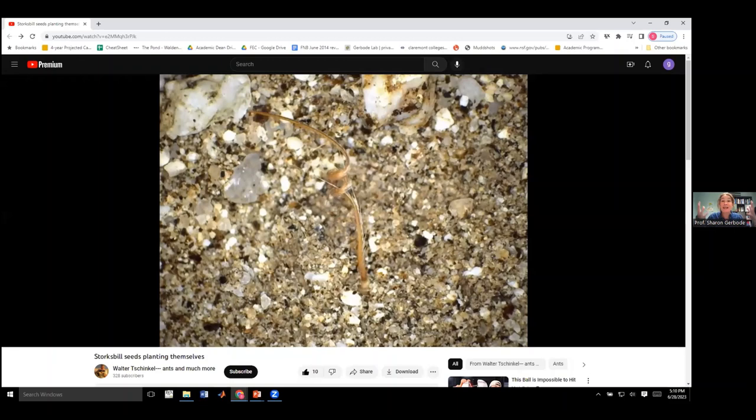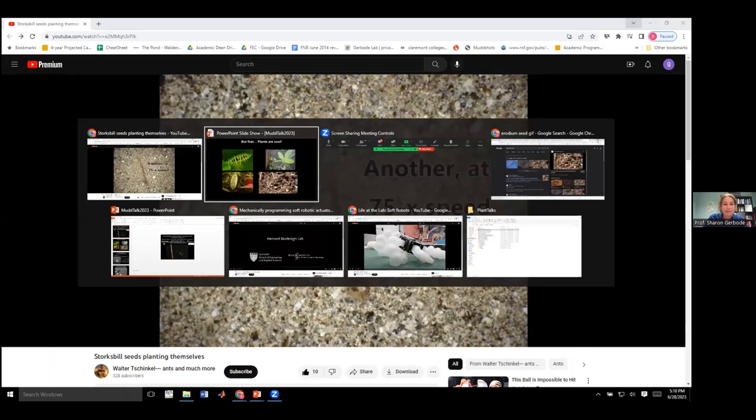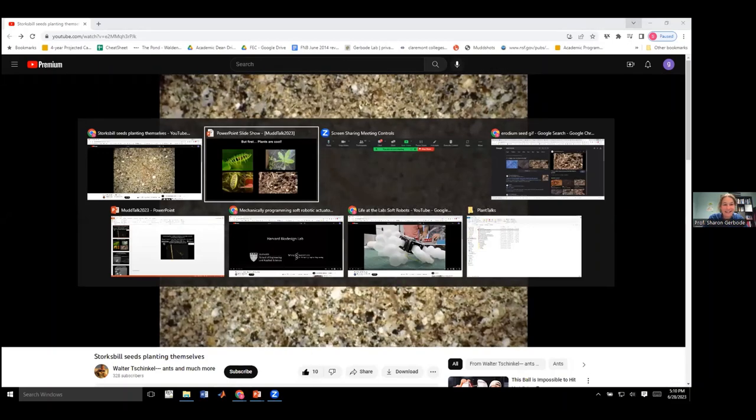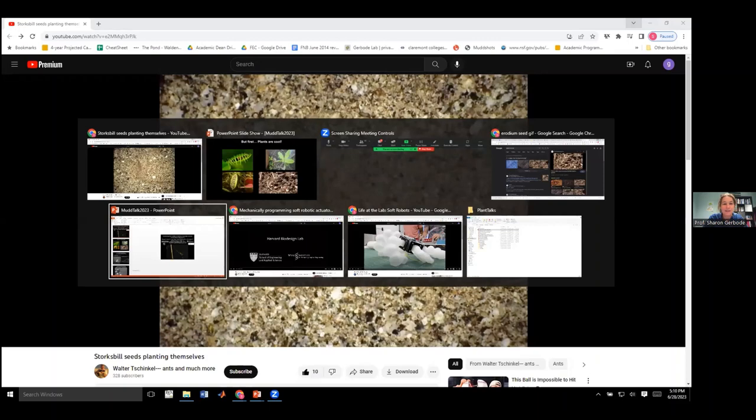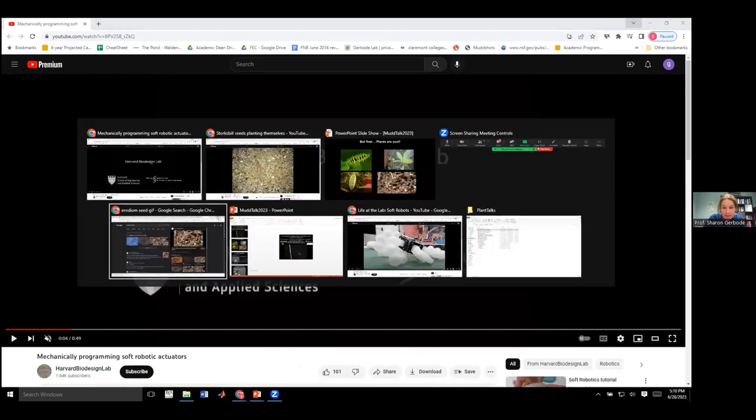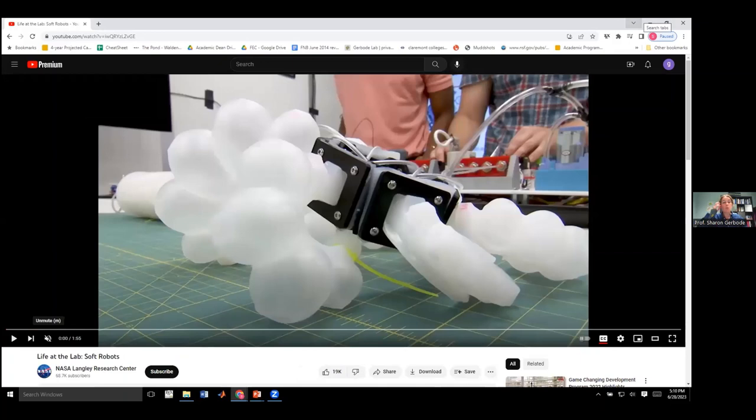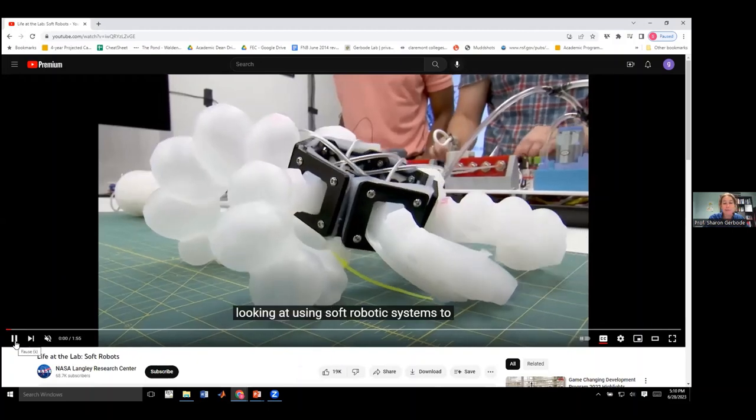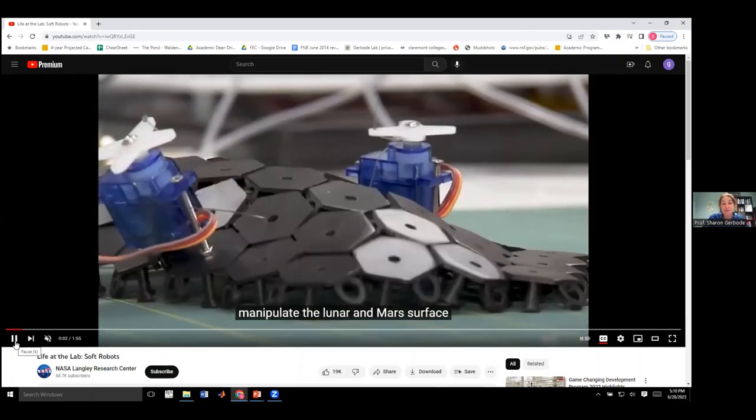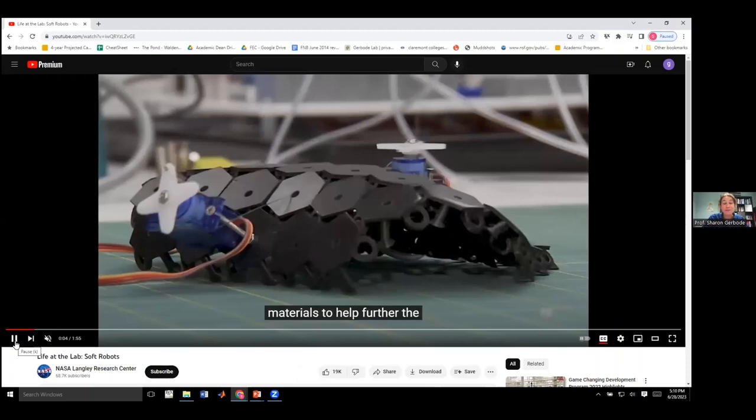When I first saw this, it absolutely blew my mind that these things can literally drill themselves into the earth to ensure that they can germinate properly, and that they do so without muscles, without any central nervous system to control the action. But it all happens passively by just absorbing and emitting water. And so everything has to be pre-programmed into the architecture of the tissue. And so this is already fascinating, as far as I'm concerned, but it's also useful for doing, whoops, let me get to this one.